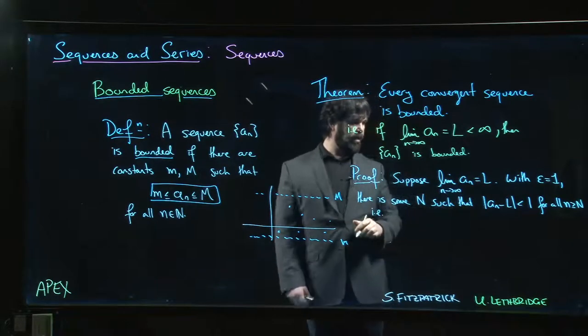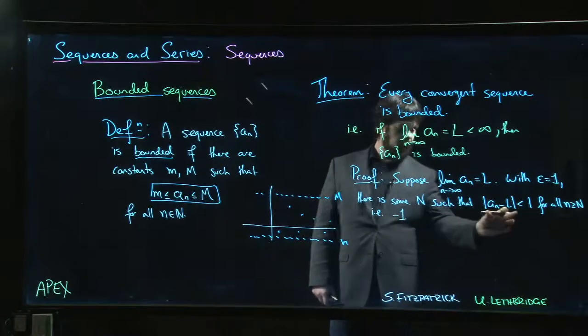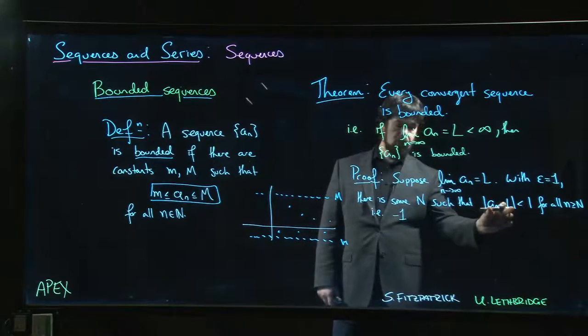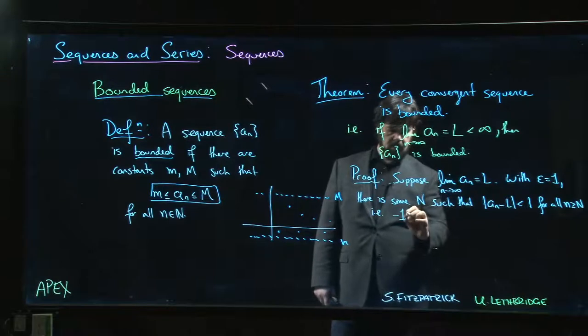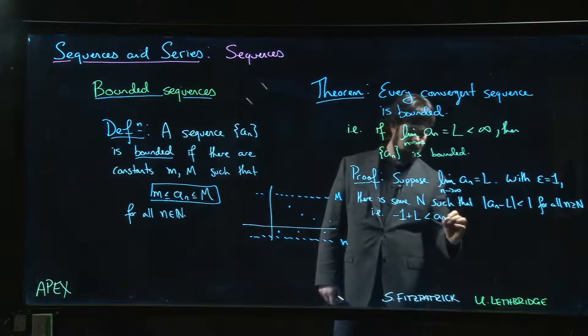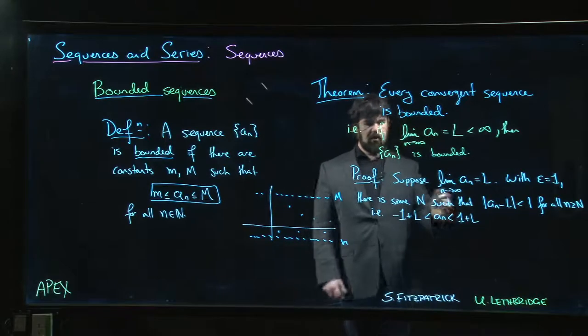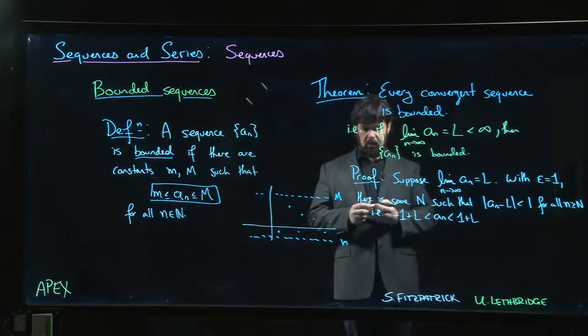Another way to rewrite this is to say that this difference is between -1 and 1. If I add L to everything, that means L - 1 is less than a_n is less than L + 1. So a_n is between L - 1 and L + 1.